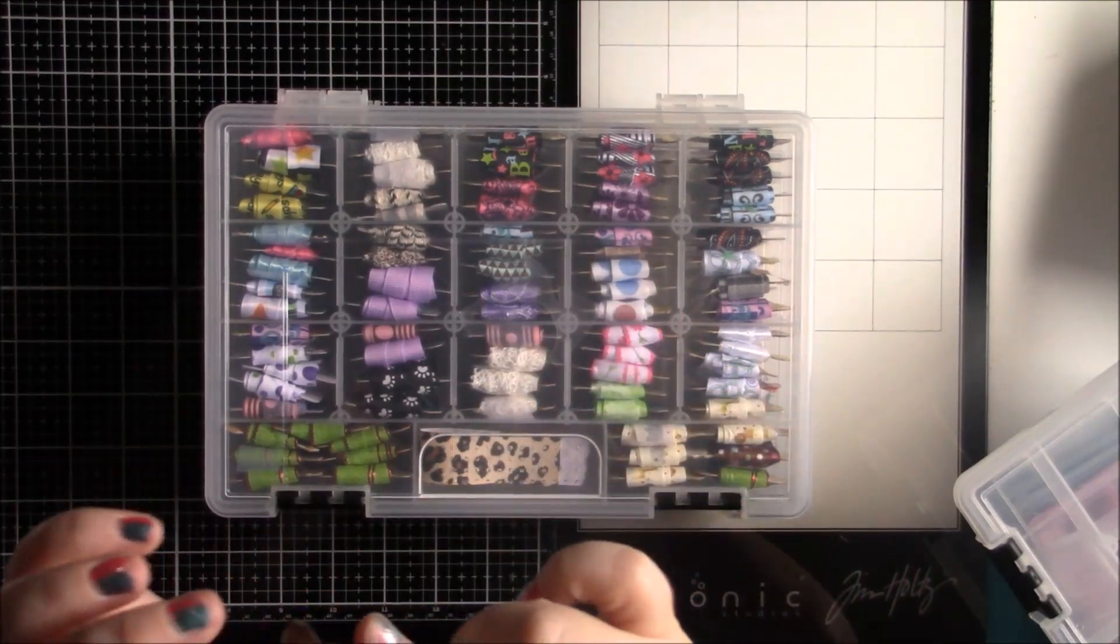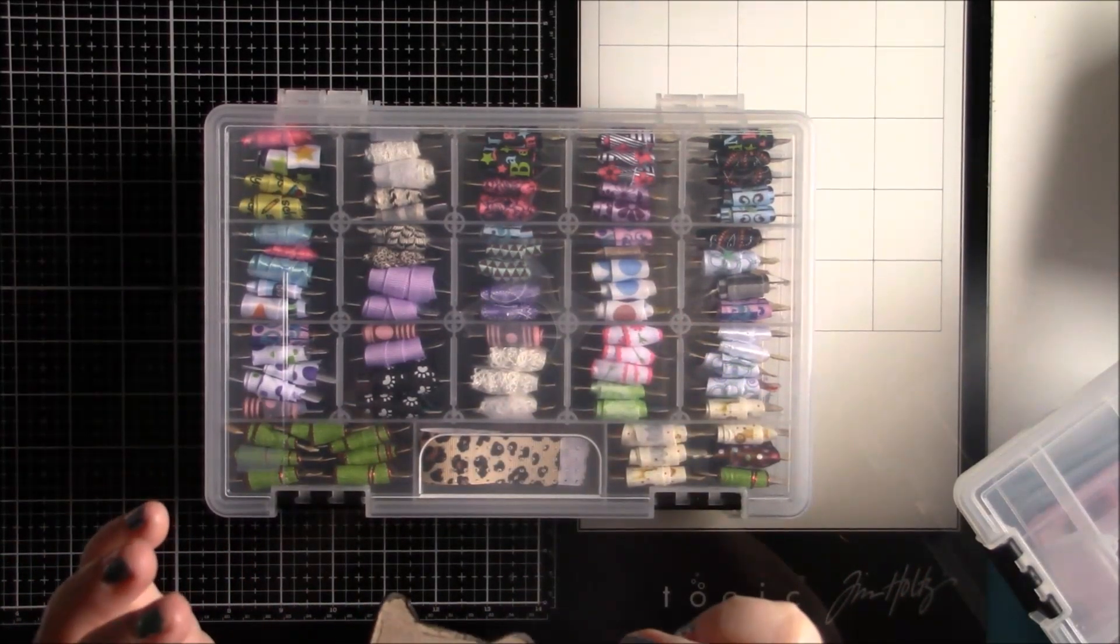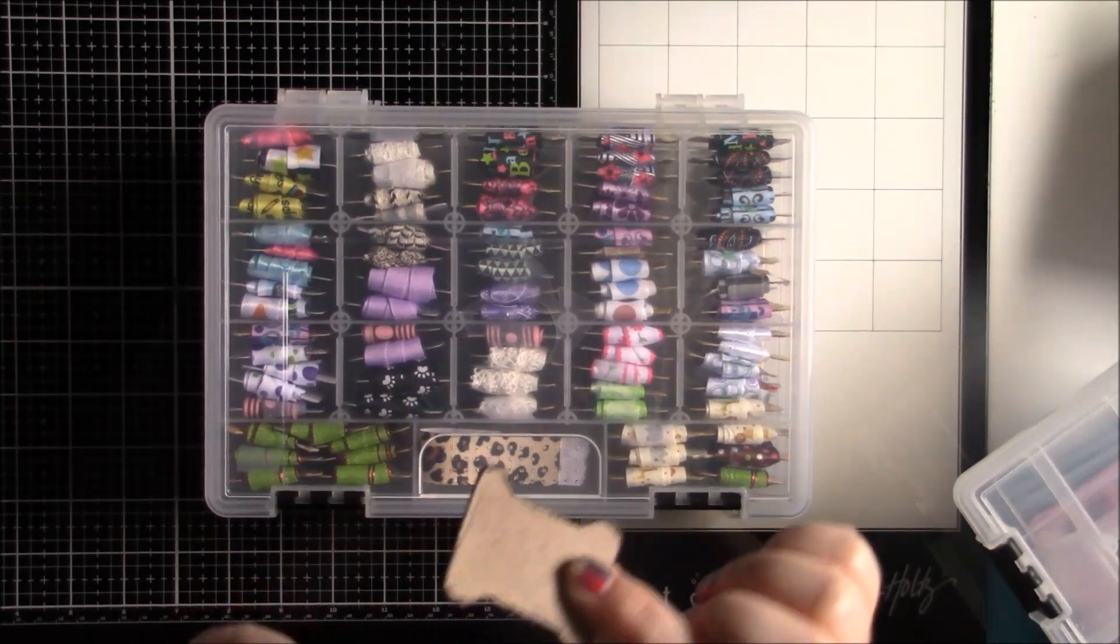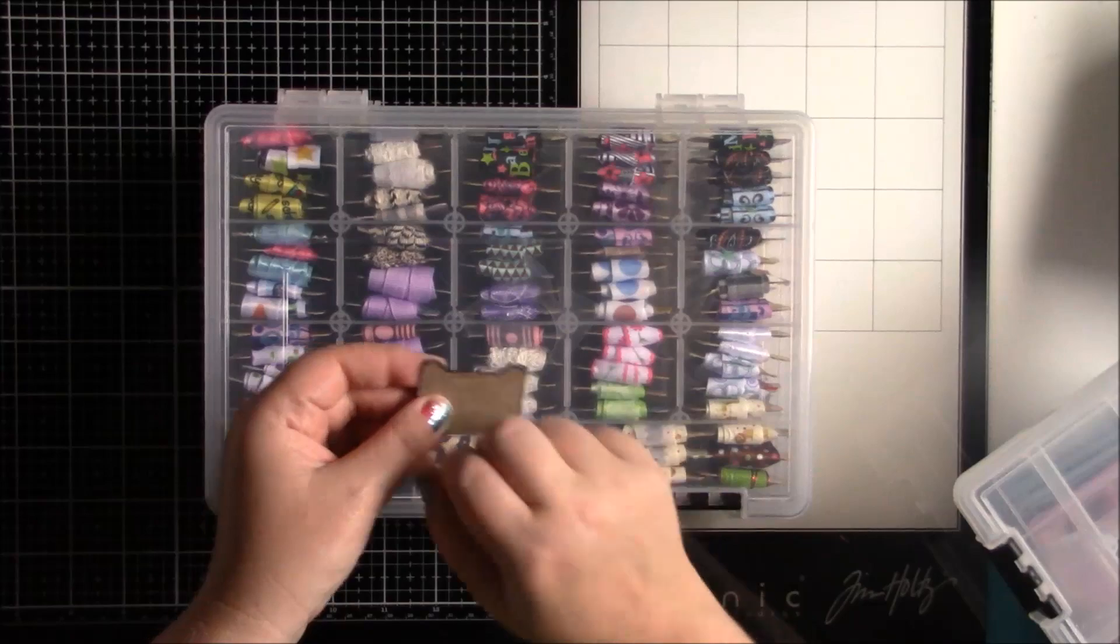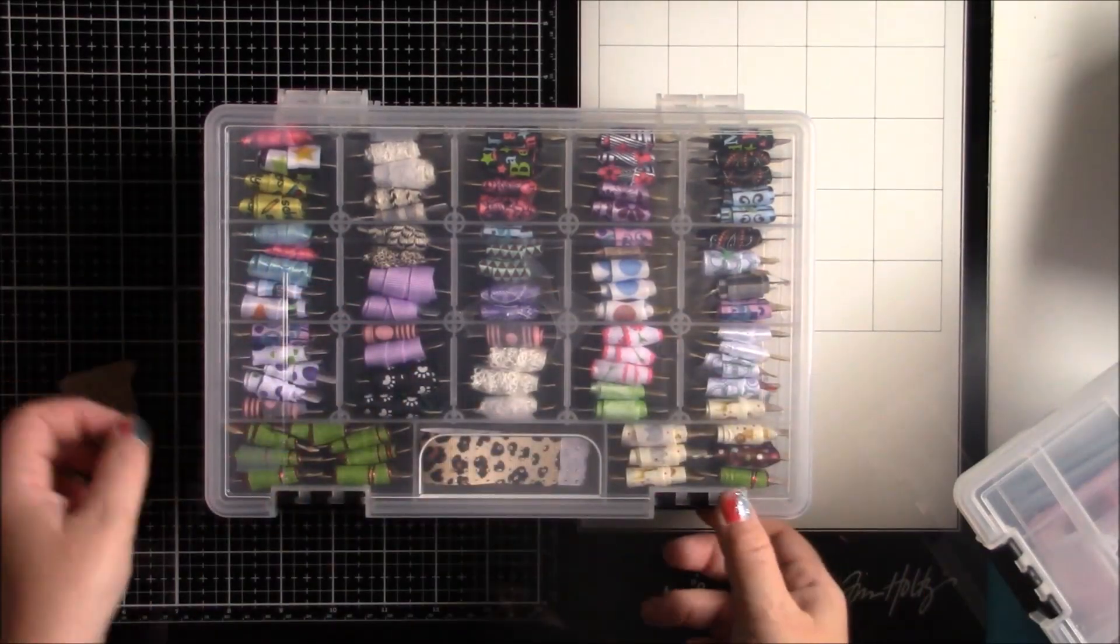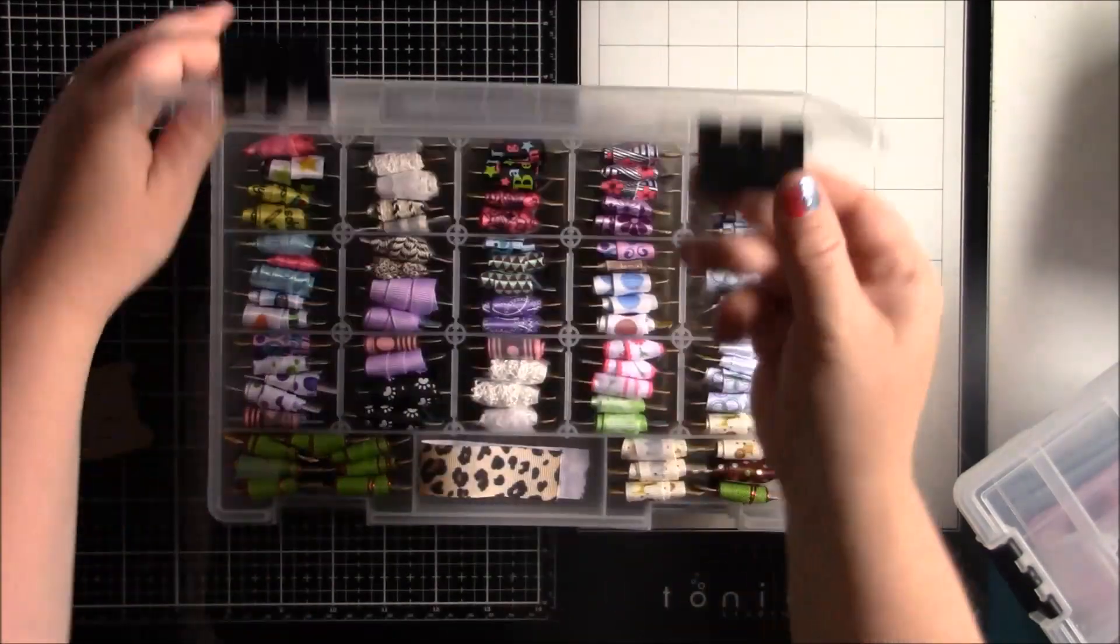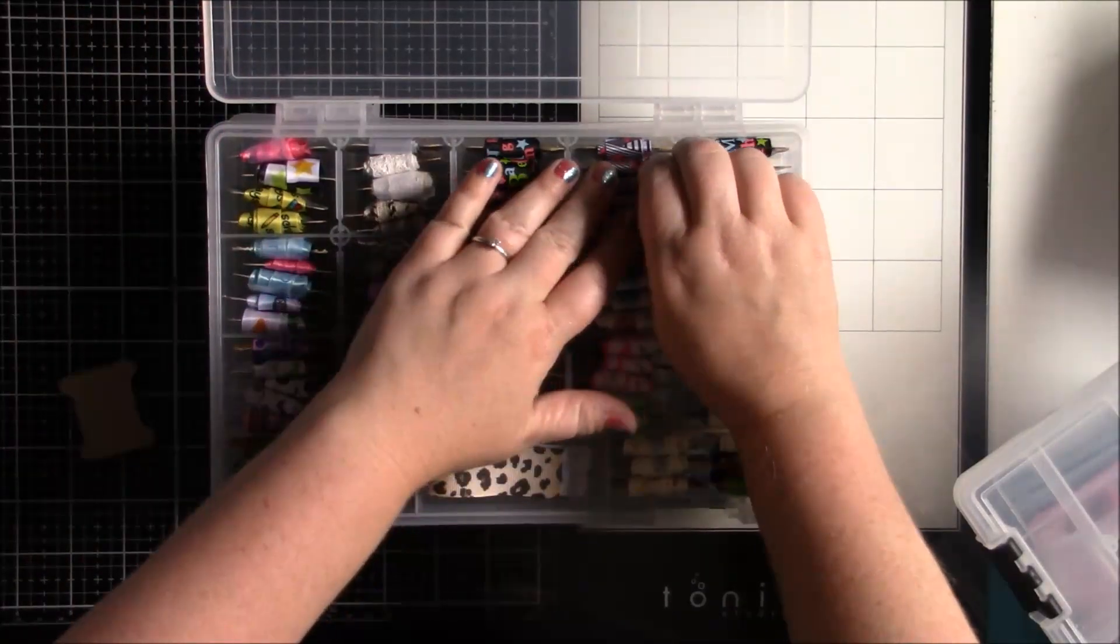And what I do is I reuse the cardboard for like mini albums, for tags, for all that stuff, and then I also use it for my bobbins to wrap my ribbon around. So I just trace this a million times and then cut them out while I'm watching TV, and then I just thread a bunch of ribbon around it.